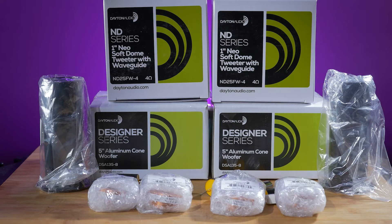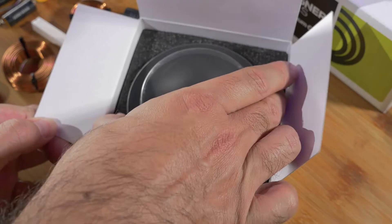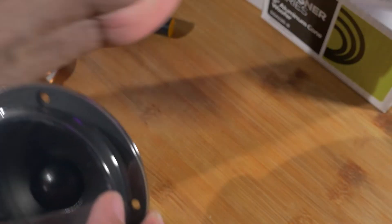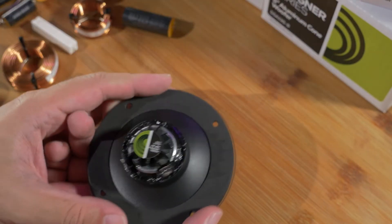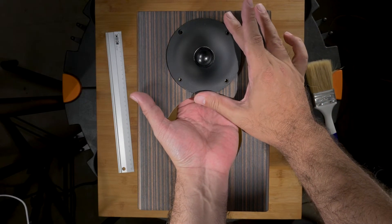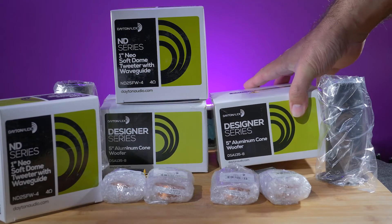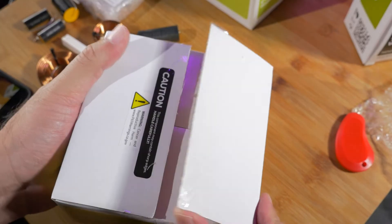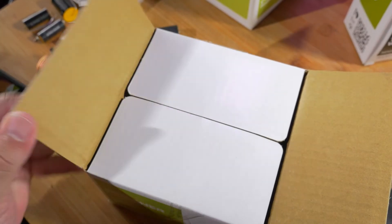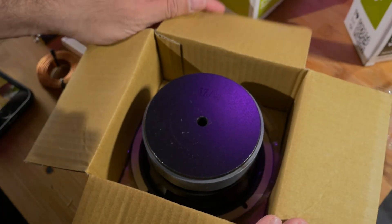The kit comes with a complete set of drivers for your speaker build. First up, we have a one inch soft dome neodymium tweeter with the waveguide. The waveguide sits inside of the speaker and they routed it out just for this tweeter, so it sits in there really nice and cleanly. We also get a five inch aluminum cone woofer.